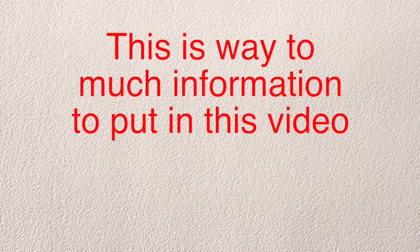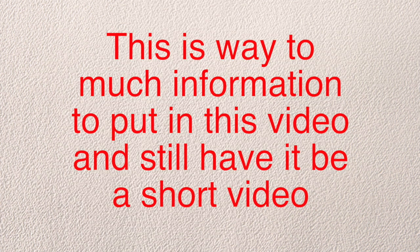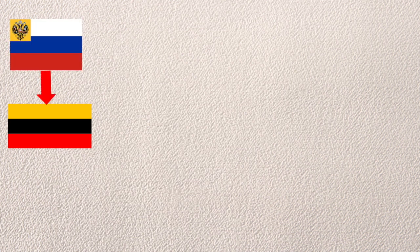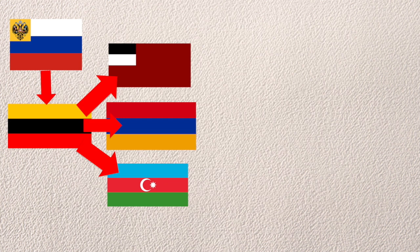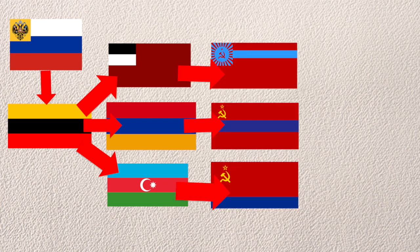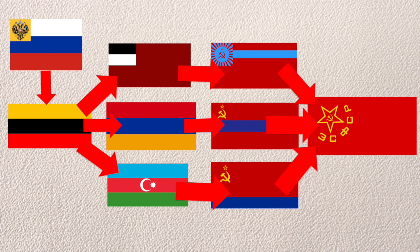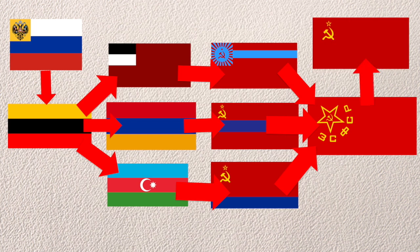Okay, so next up is the Caucasus, and this is going to be really generalized — this is way too much information to put in this video and still have it be short. The Transcaucasian Democratic Federative Republic is formed out of the Russian civil war. This broke apart into Georgia, Armenia, and Azerbaijan. These got turned into SSRs, which then united into a Transcaucasian Socialist Federative Socialist Republic. This joined the USSR, then broke apart into the SSRs again.